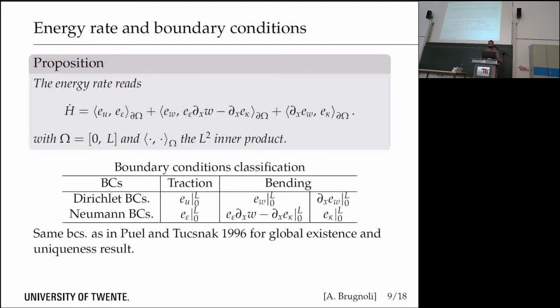Once you compute the energy rate, you will find this energy rate with the classical linear part related to the membrane behavior, and this one related to the linear bending behavior. Then we have this vertical velocity with the classical linear part given by the shear stress, but also this contribution coming from the membrane behavior.